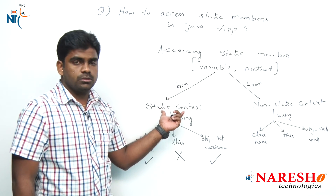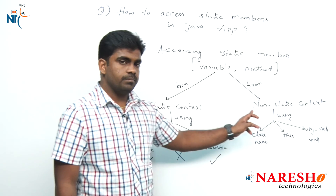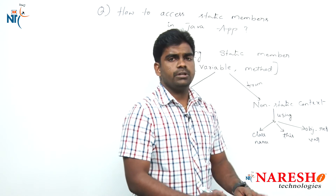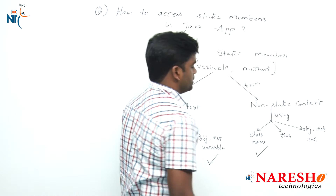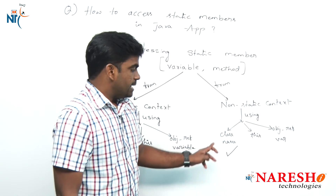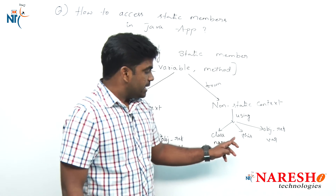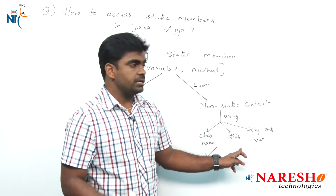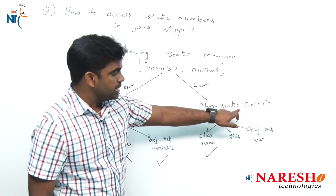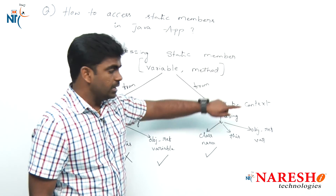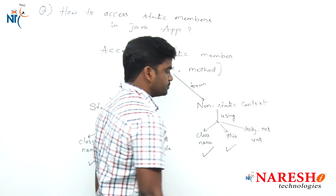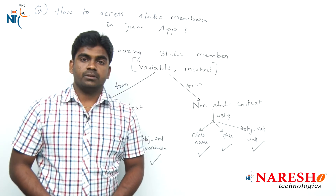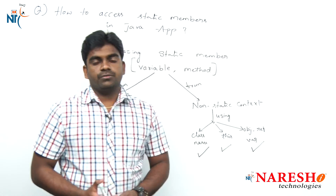From where you are accessing also matters. When accessing a static member from a non-static area, you can use the class name, and here you can also use the `this` keyword because you are in a non-static area. Of course, an object reference variable can also be used to access.